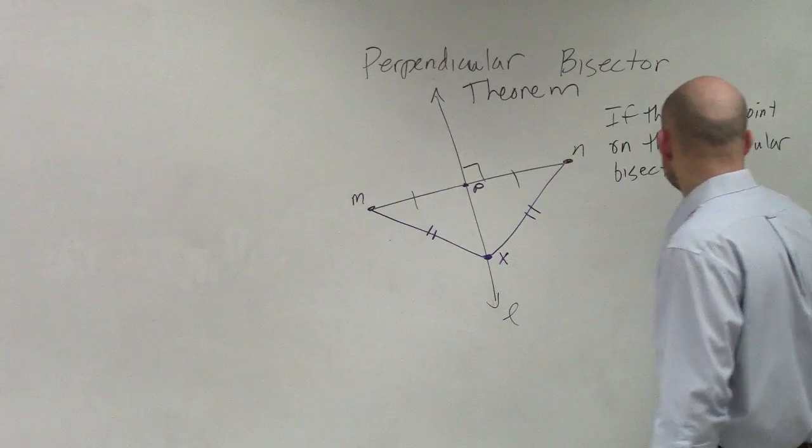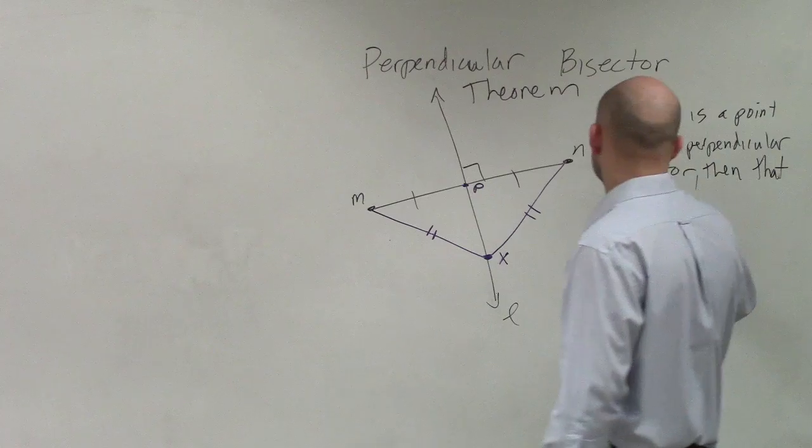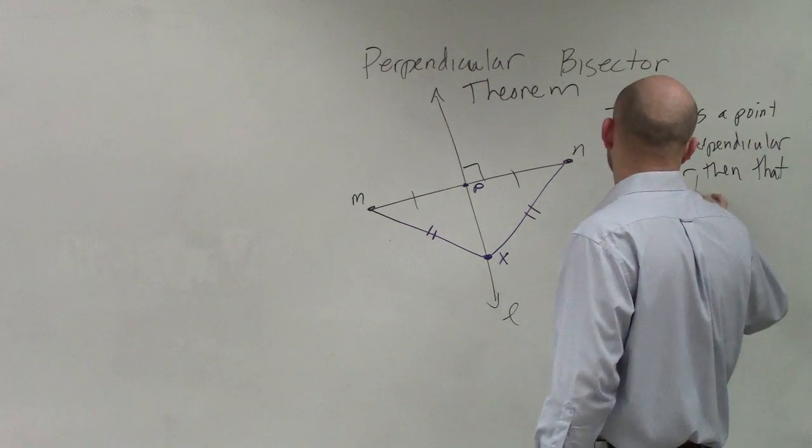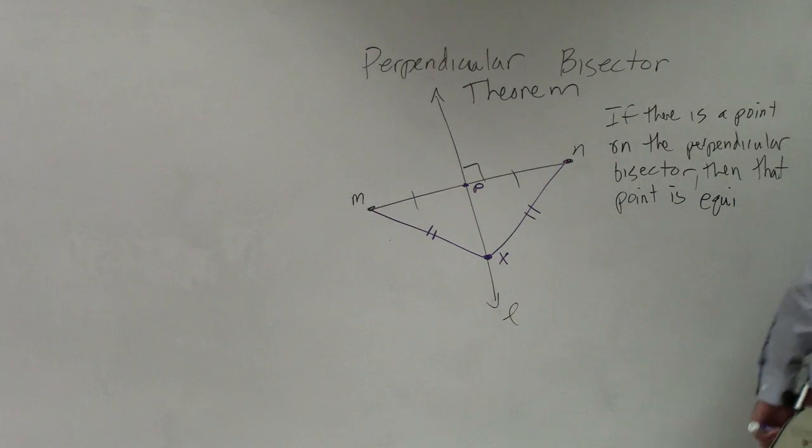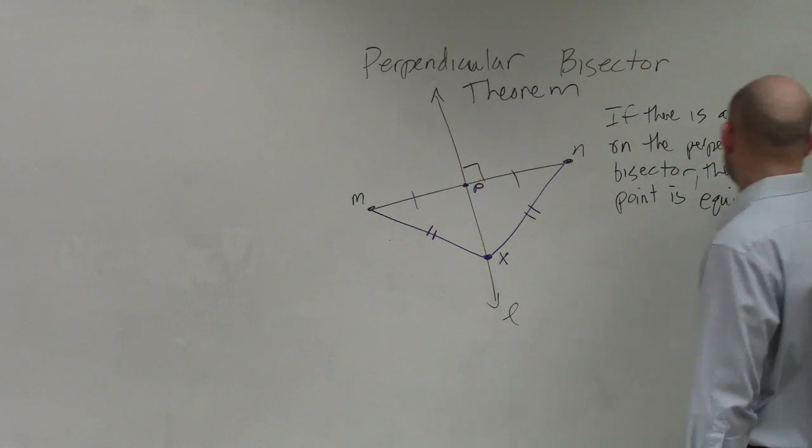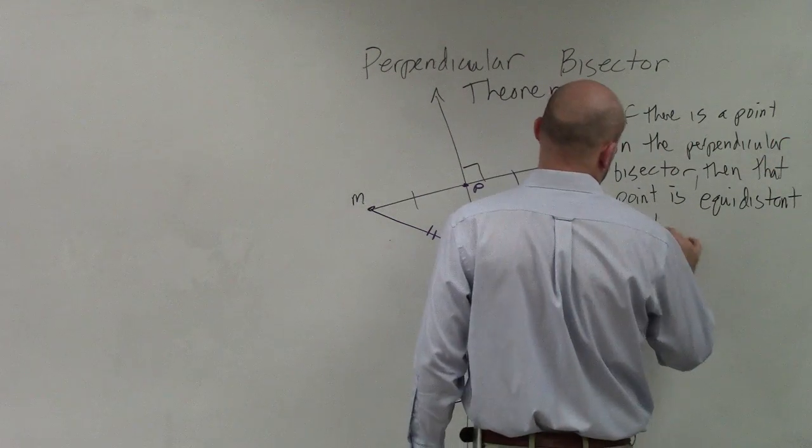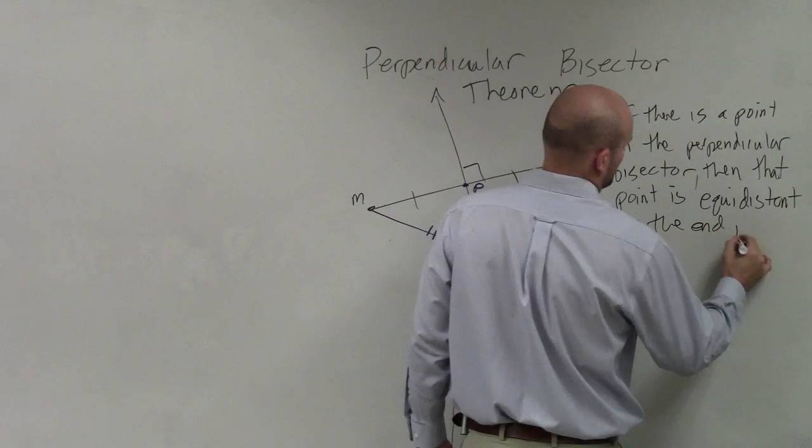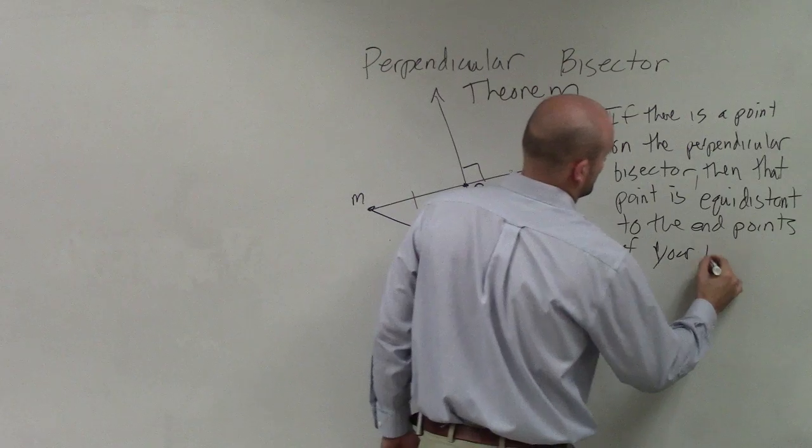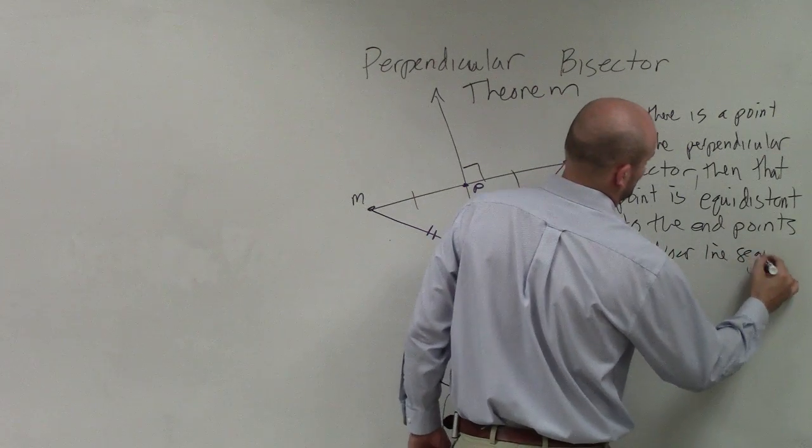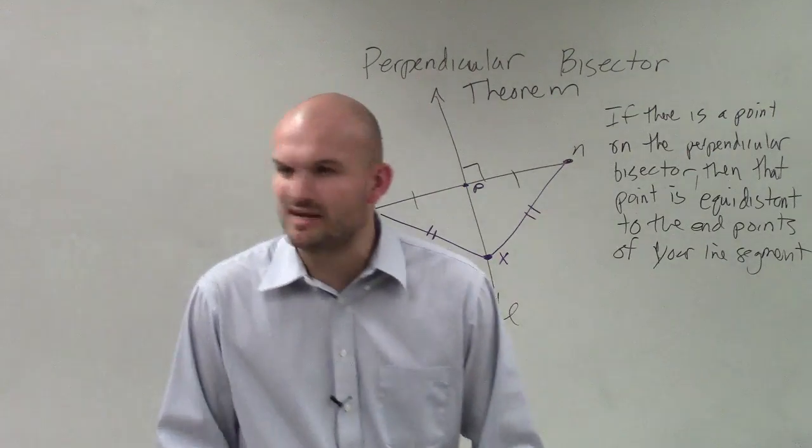If there is a point on the perpendicular bisector, then that point is equidistant to the points of your line segment. Anybody have any questions on that?